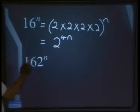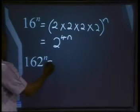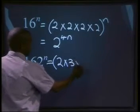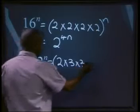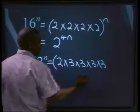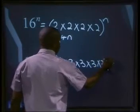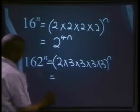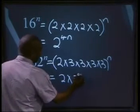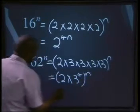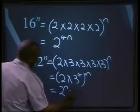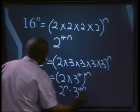Therefore we can write 162 to the power of n as 2 times 3 times 3 times 3 times 3 — four times — all to the power of n. This gives us 2 times 3 to the power of 4, all to the power of n. Which is equal to 2 to the power of n multiplied by 3 to the power of 4n.